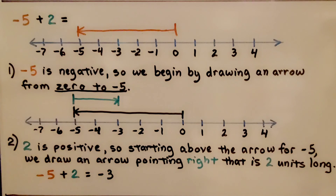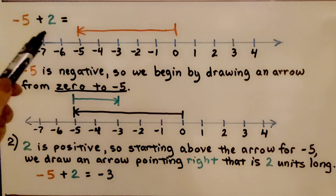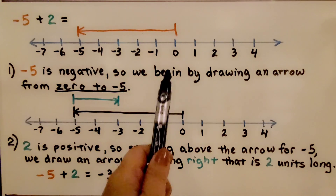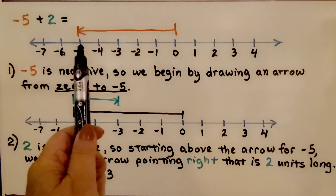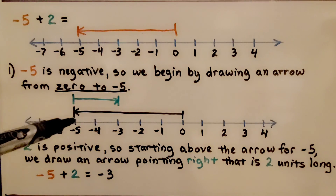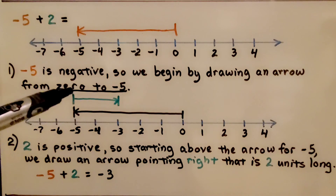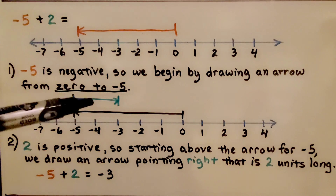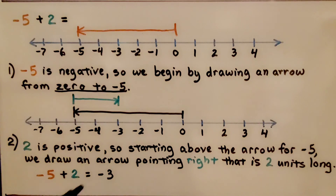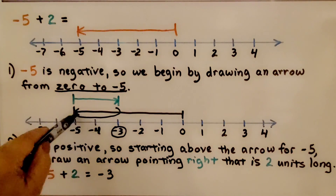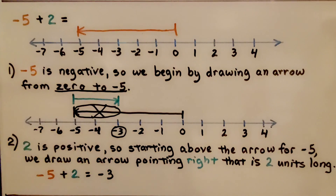What would happen if their signs were reversed? If we had negative 5 plus positive 2: since negative 5 is negative, we begin by drawing an arrow from 0 to negative 5. The 2 is positive, so starting above the arrow for negative 5, we draw an arrow pointing to the right that is 2 units long. That puts us at negative 3. This arrow canceled out part of the negative 5 arrow. So negative 5 plus 2 is equal to negative 3.